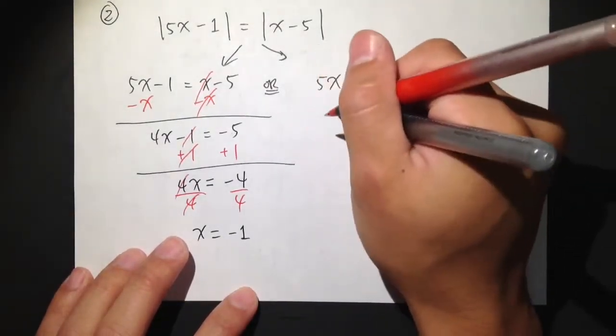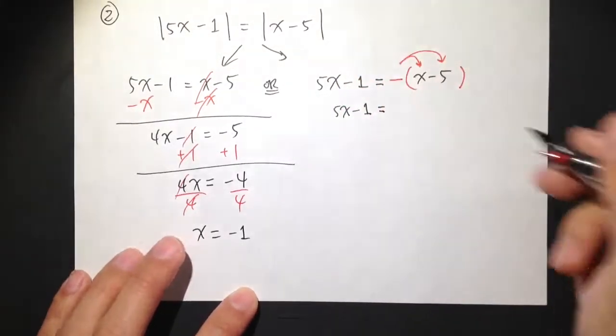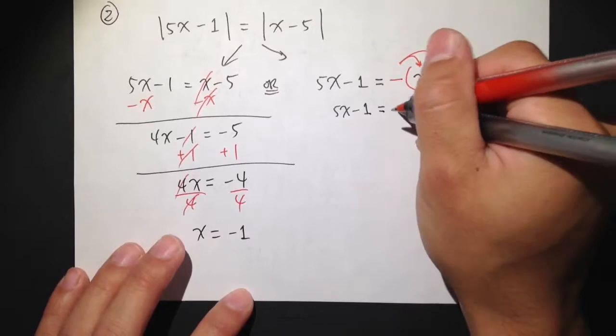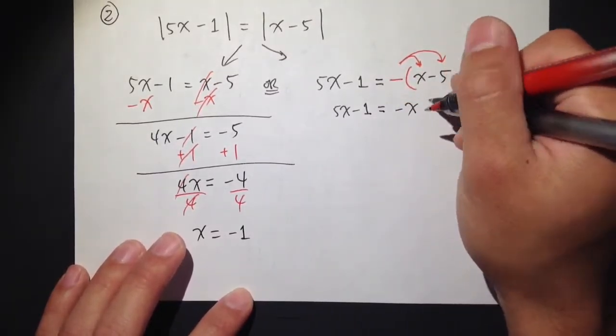So let me write down 5x minus 1 first, nothing changed here. But then that was equal to negative x, the negative distributes the negative 5, we get plus 5.